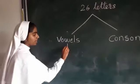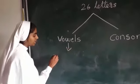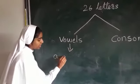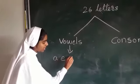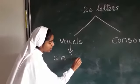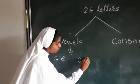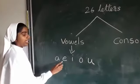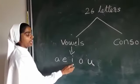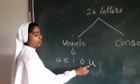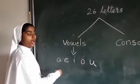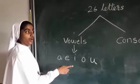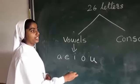What are they? A, E, I, O, U. A, E, I, O, U. How many vowels are there? There are 5 vowels.